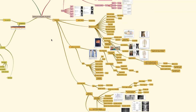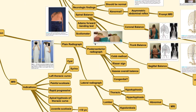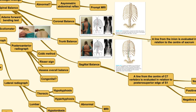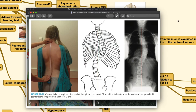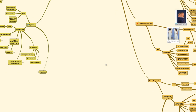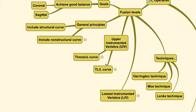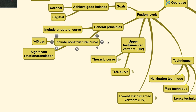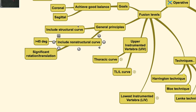Balance is determined using measurements such as coronal balance and sagittal balance taken from the center of C7 to the posterior superior edge of S1. During surgery, the structural curve — the largest curve — is generally included, and the non-structural curve is also included in the fusion if it has a high degree (more than 45 degrees) or significant rotation.